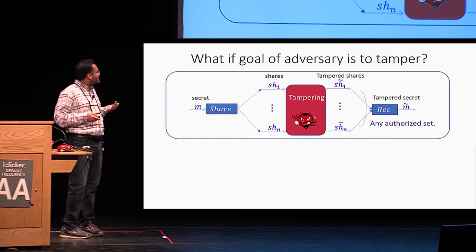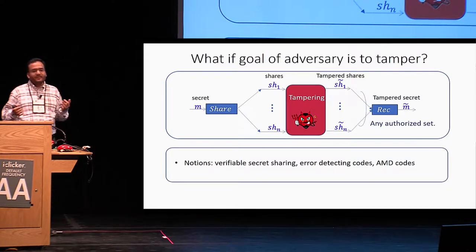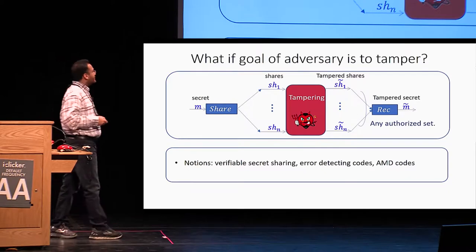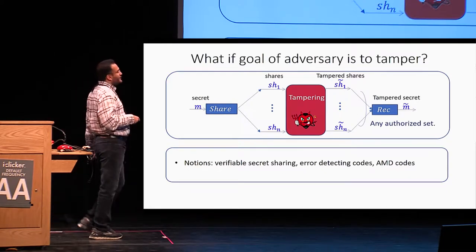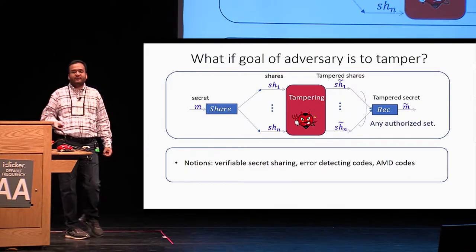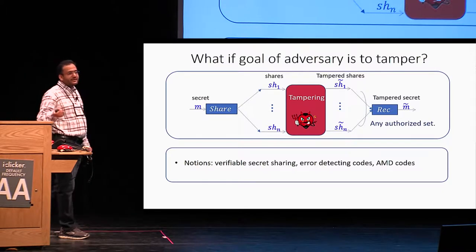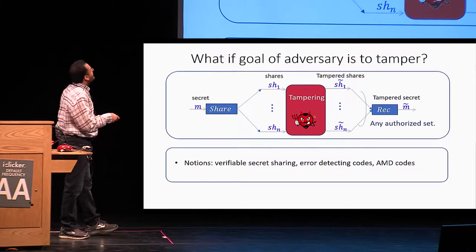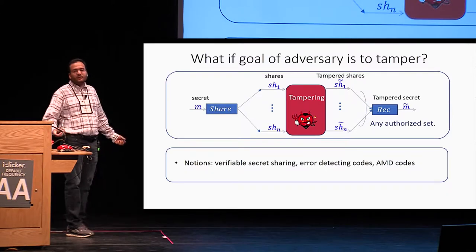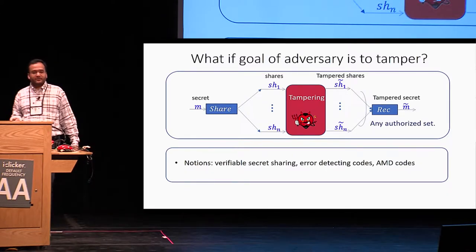In this setting, one could ask for several different guarantees. Accordingly, in the literature people have proposed several different notions — examples being verifiable secret sharing, and the notion of error-detecting codes and AMD codes, which is very close to this setting. Each of these primitives comes with different guarantees and has different applications.